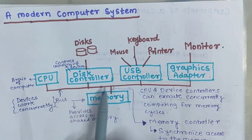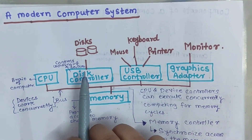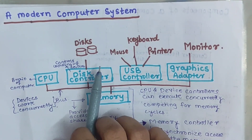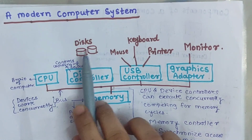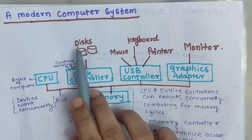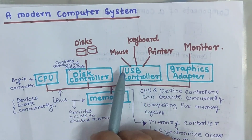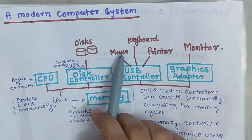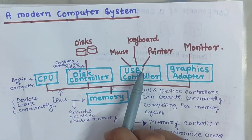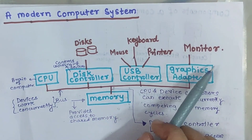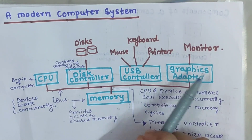Next is the disk. These are the various devices of a modern computer system. To control these various devices — like to control the disk, there are disk controllers; to control the USB devices like mouse, keyboard, and printers, there are USB controllers; and to control the display devices like monitor, there are graphic adapters.